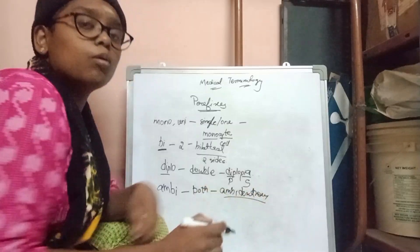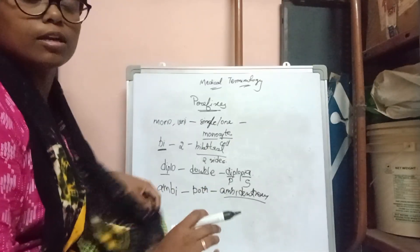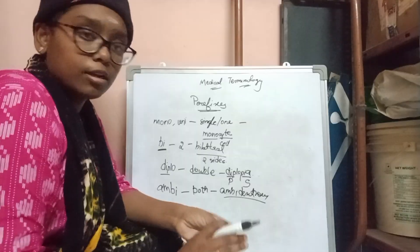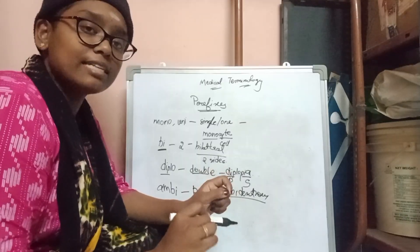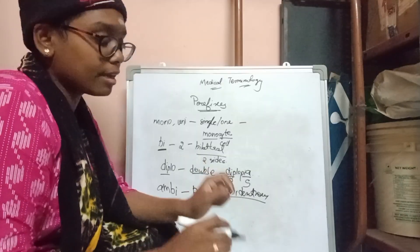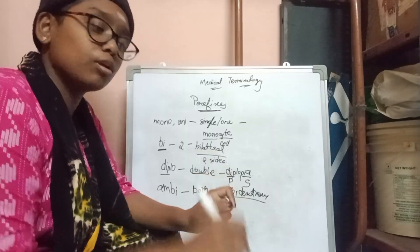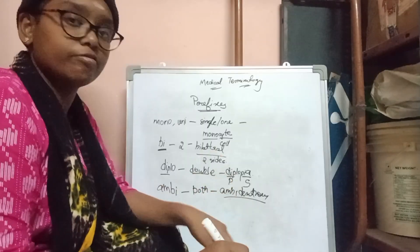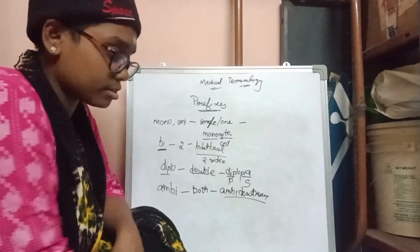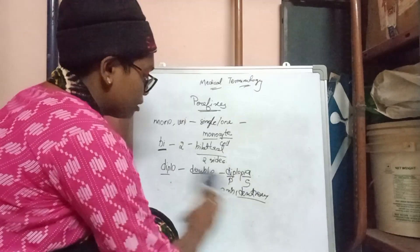Ambidextrous refers to people who can write using both hands in a similar way — just as we normally write with our right hand, they can write equally well with both their right and left hands. That is what ambidextrous means.